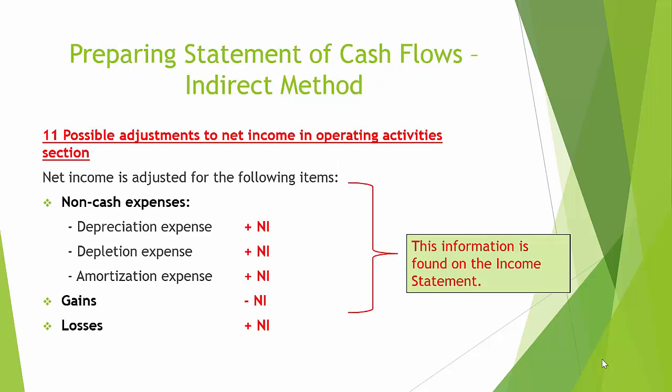There are 11 possible adjustments to net income in the operating activity section. Under the indirect method, we start with net income. Net income is adjusted for non-cash expenses — depreciation, depletion, amortization. These do not involve cash outflow, so we would add them back to net income. Gains will be subtracted from net income since they do not belong in the operating section, and losses would be added back to net income to remove them from the operating section.